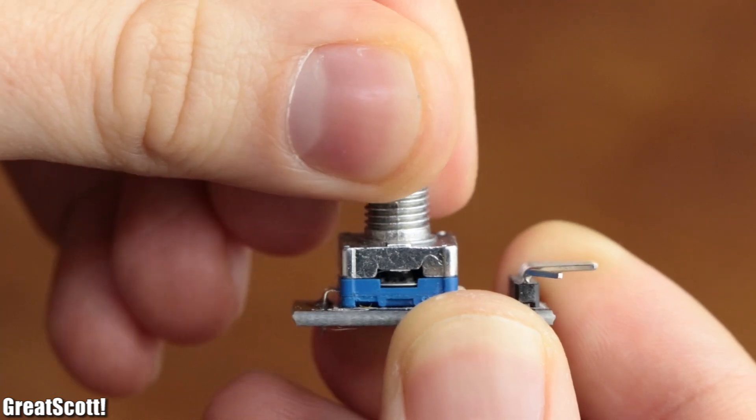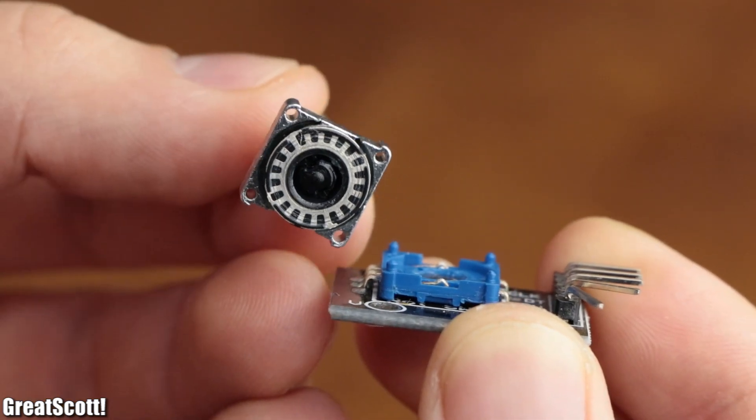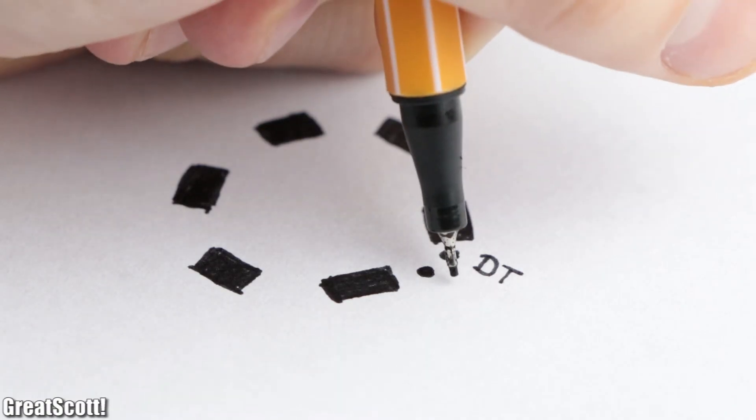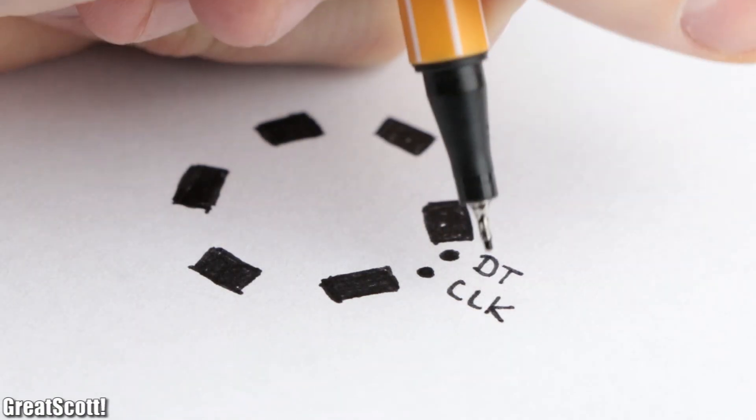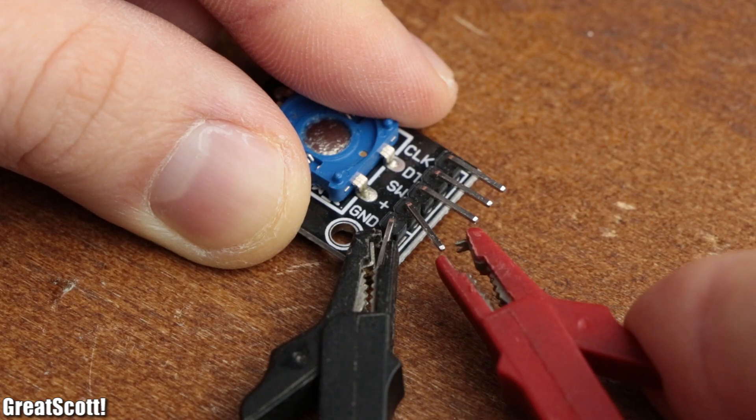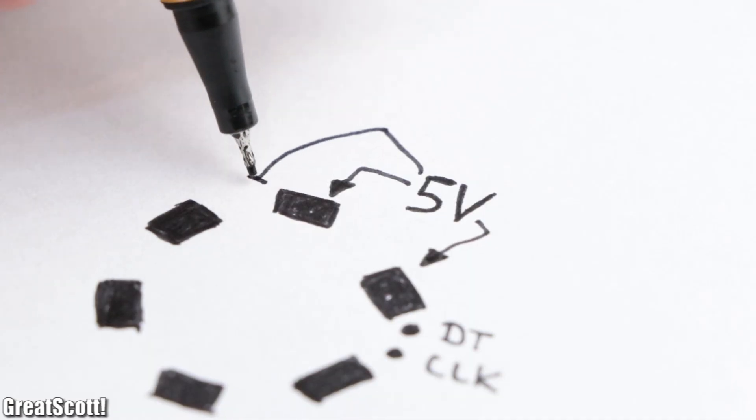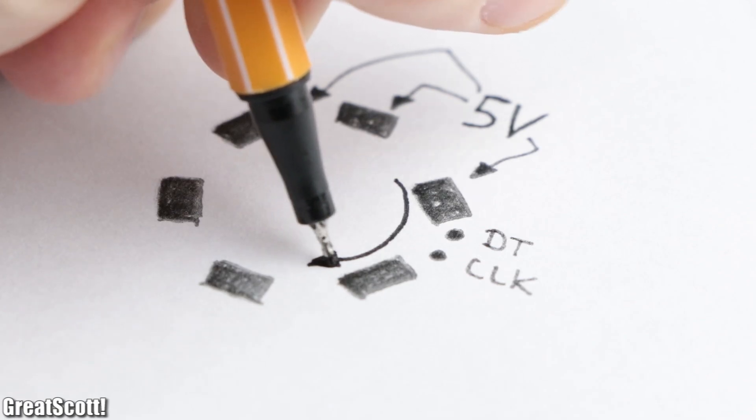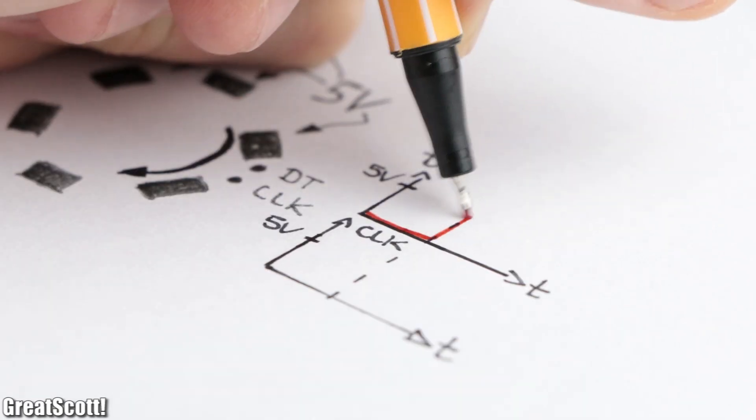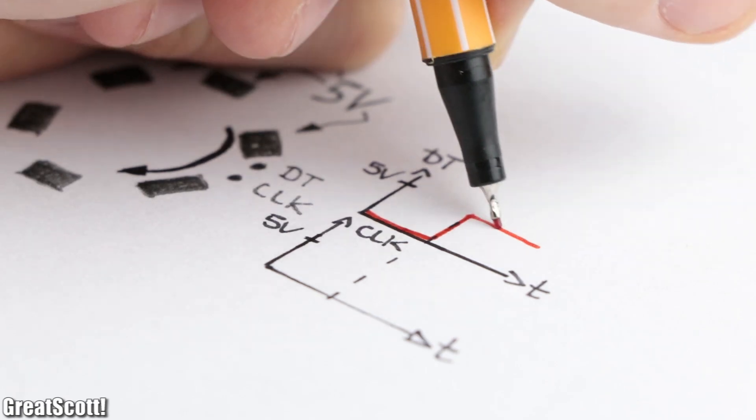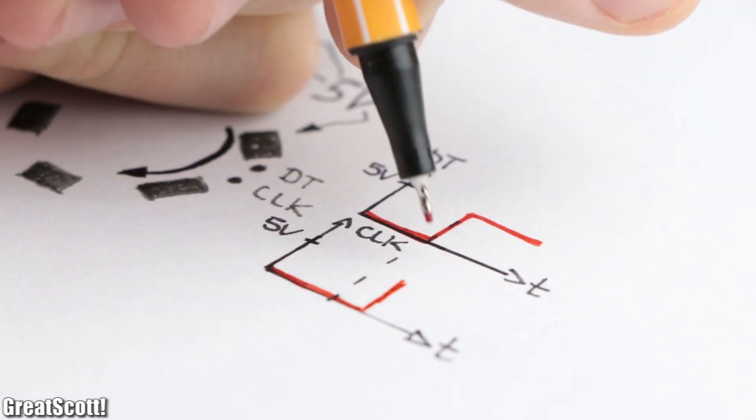While it is quite difficult to understand its functional principle through the real-life example, the idea is quite easy to grasp with a drawing. When 5 volts is connected to the encoder, its metal disc is connected to this voltage potential as well. Which means once we rotate the circle from one increment clockwise, the DT pin gets connected to 5 volts before the CLK pin does.